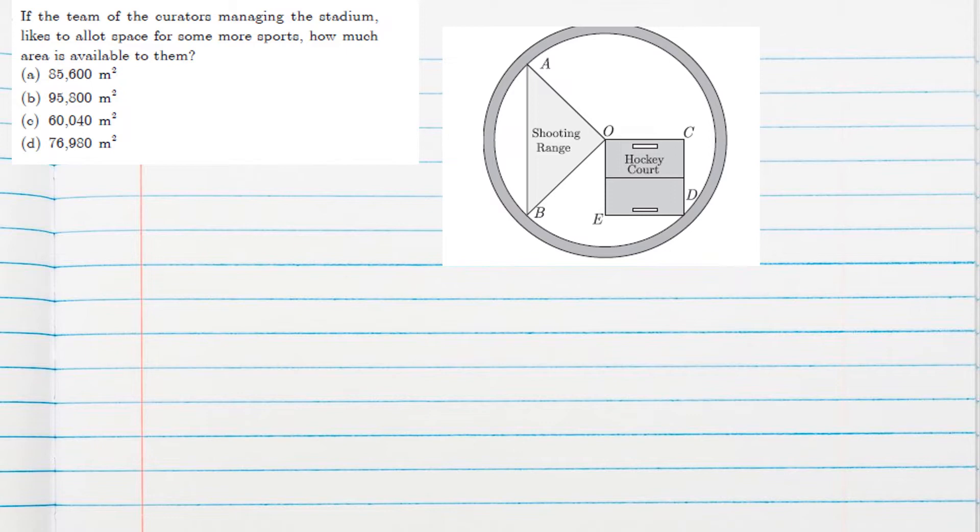Next question is the team of the curator managing the stadium likes to allot a space for some more sports. How much area is available to them? This means excluding shooting area and hockey area, the remaining area. Remaining area means from the circle, area of the circle, if we remove these two, we will get the remaining region.